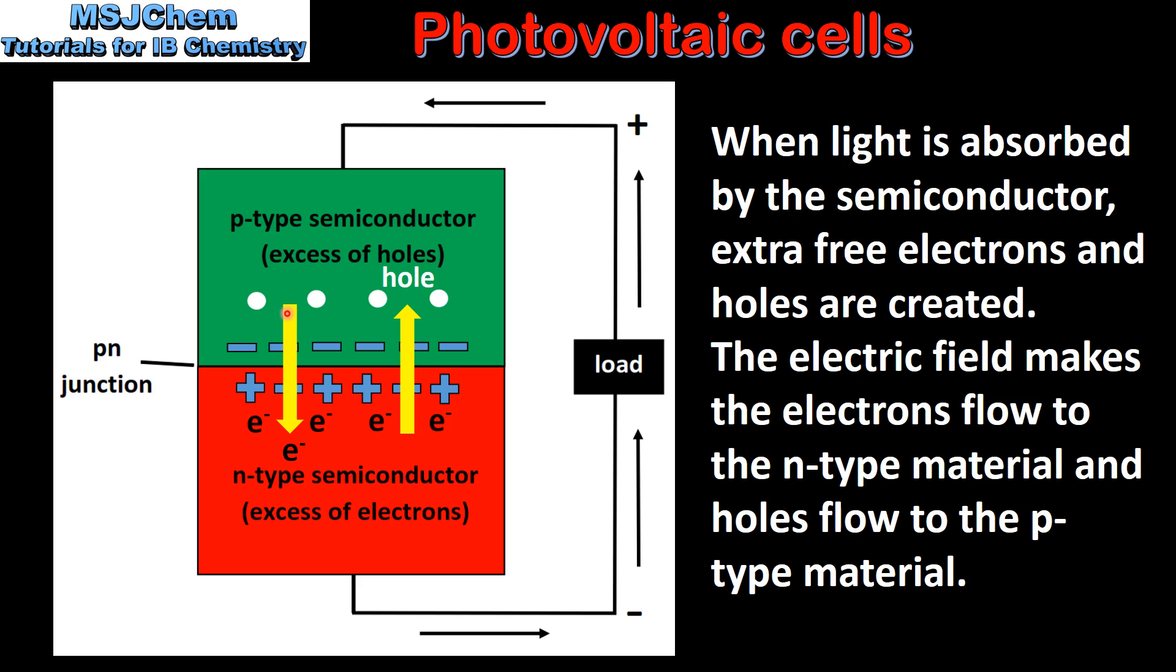The arrow on the left shows the electrons flowing from the p-type to the n-type semiconductor, and the arrow on the right shows the holes flowing from the n-type to the p-type semiconductor.